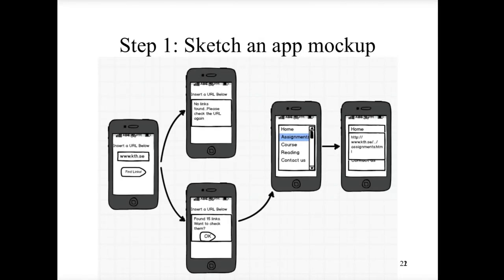For our application we consider these screens. The first screen tells the user to insert a URL below, with a button. We consider two scenarios: if the link doesn't exist, the app informs the user with a notification. If the link does exist, it tells the user the number of links found.